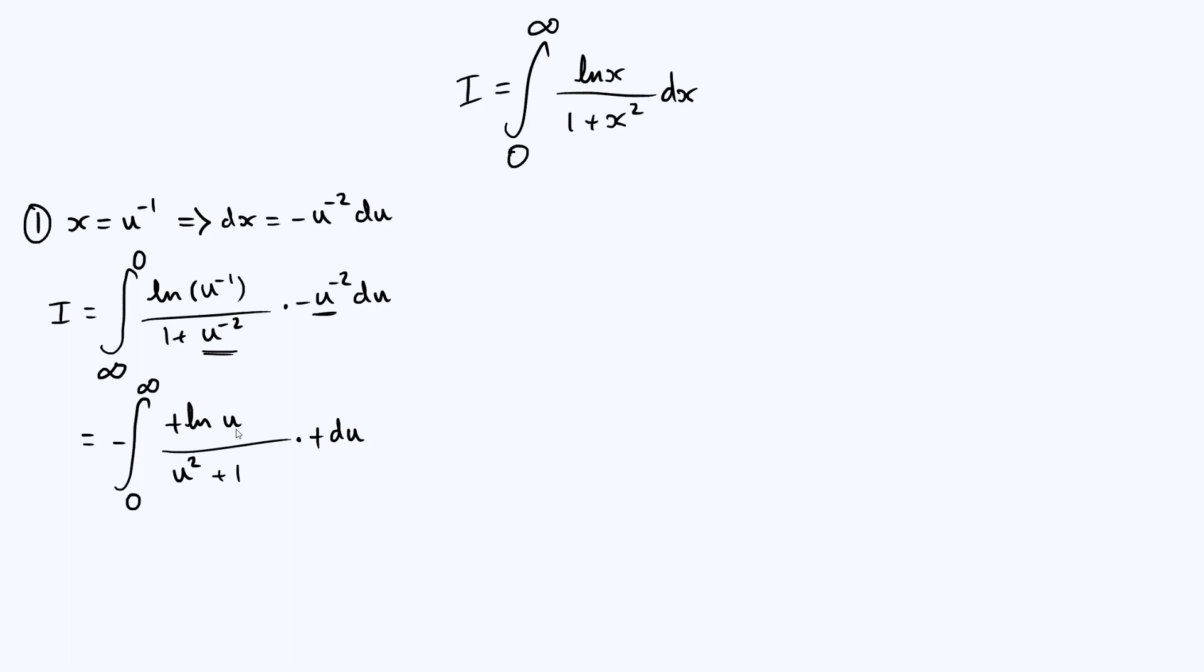Notice that what we've got now is the same as what we started with, but with u's instead of x's. But that doesn't matter. It's still the same thing because it's just a dummy variable. We're integrating over it. What we have is because of this minus sign in front of this whole expression, we have found that i is equal to minus i. Now, we can rearrange this to get 2i equals 0, and therefore i itself is also 0. So i is 0. We've shown that our integral is 0.